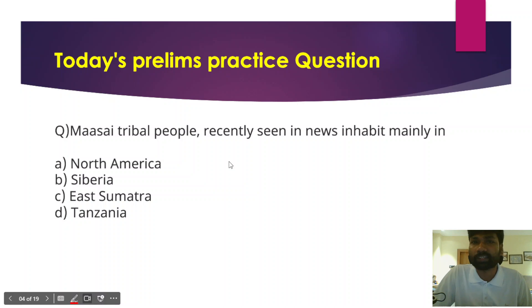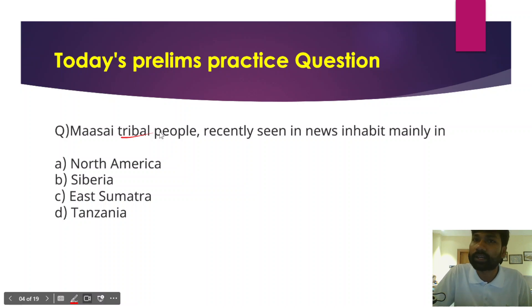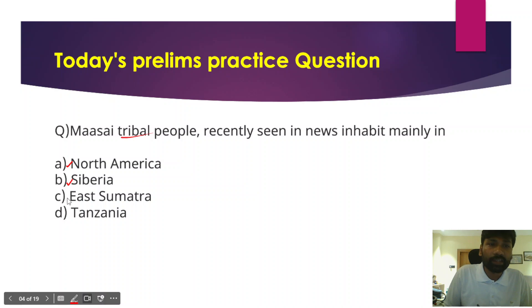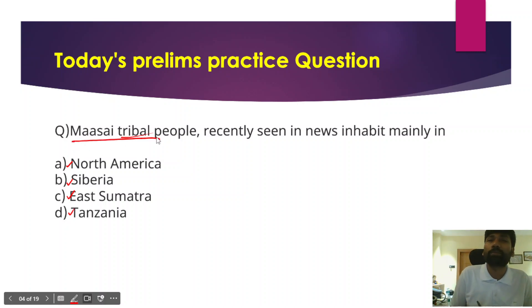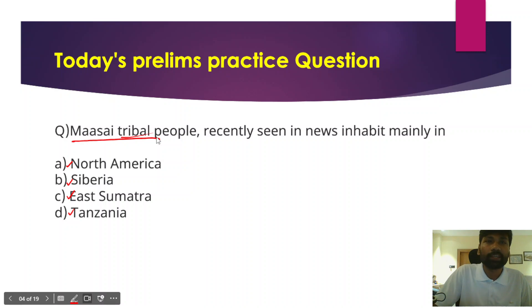Today we have another prelims practice question: Maasai tribal people, recently seen in news, inhabit mainly in which of the following countries? The options are North America, Siberia, East Sumatra, and Tanzania. Questions about tribal people and their locations are very common and important. Try to answer in the comment section — the correct answer will be given in the next session.